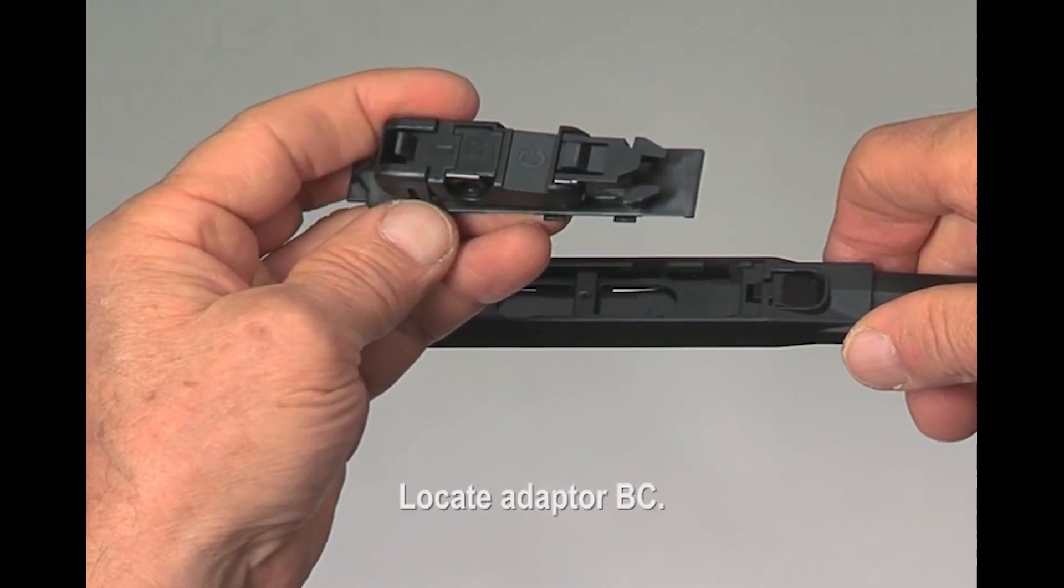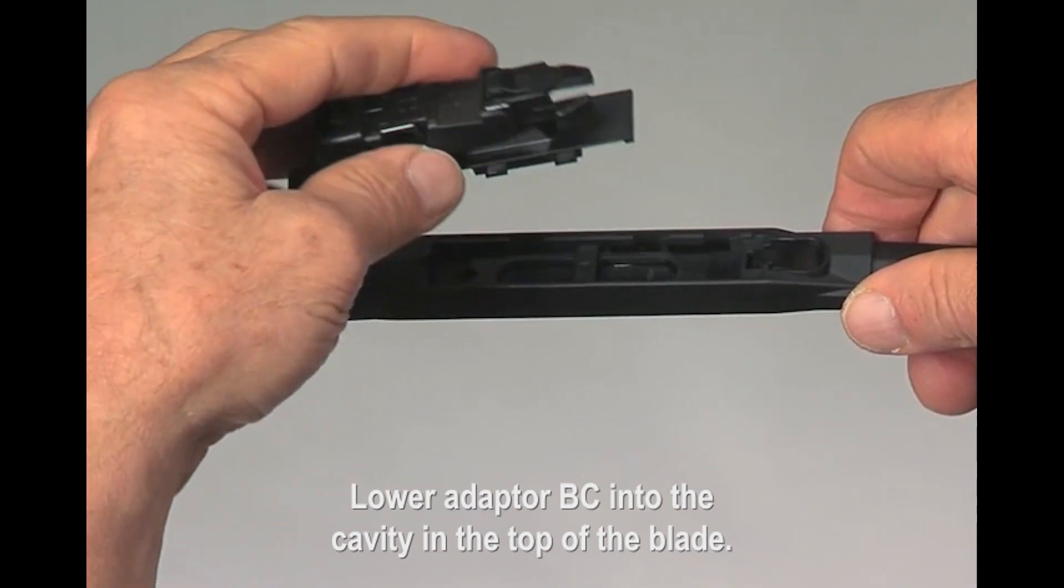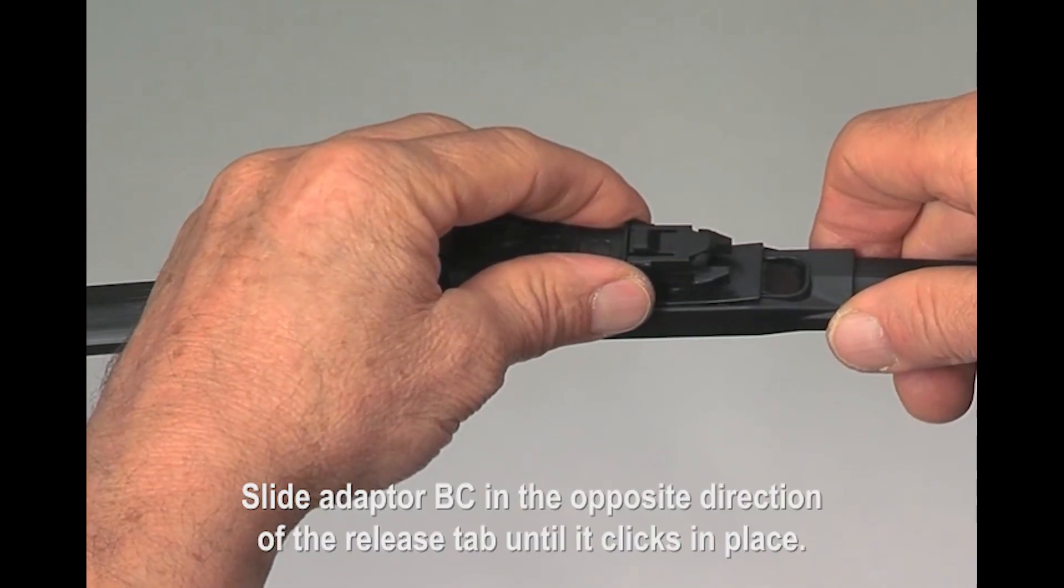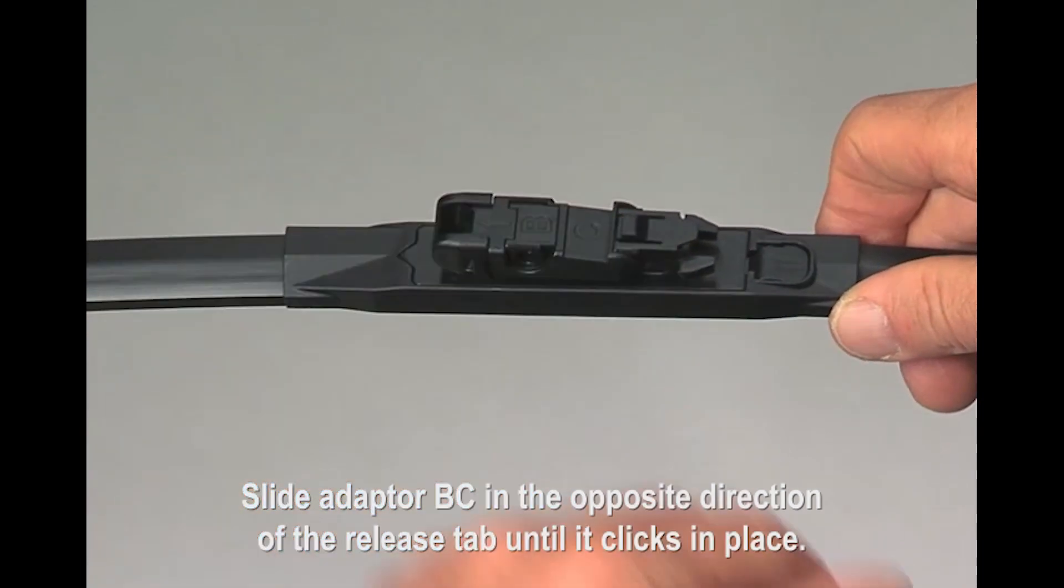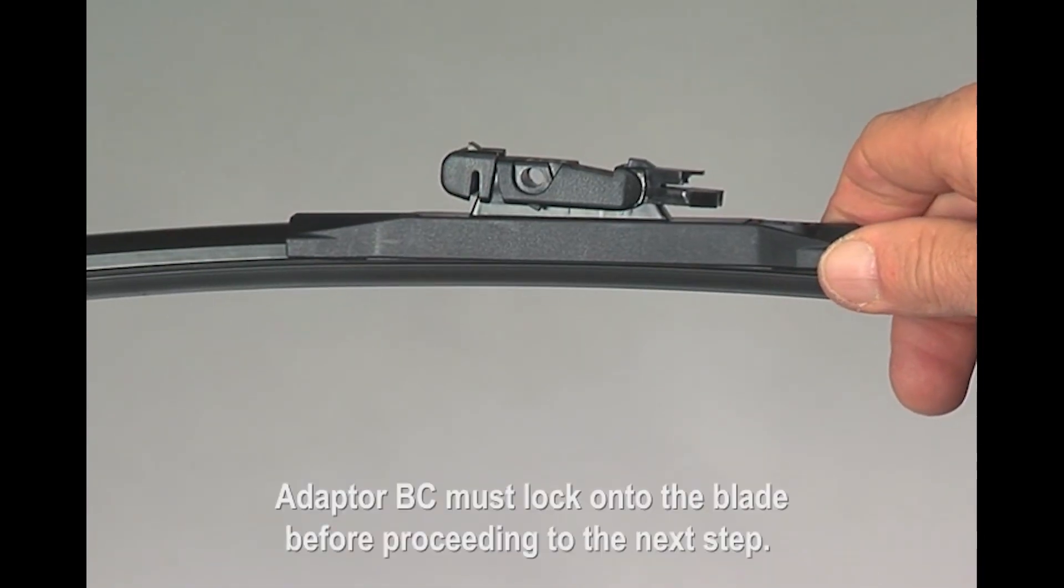Locate adapter BC. Lower adapter BC into the cavity in the top of the blade. Slide adapter BC in the opposite direction of the release tab until it clicks in place. Adapter BC must lock onto the blade before proceeding to the next step.